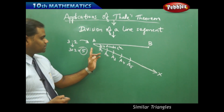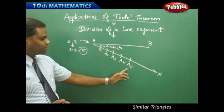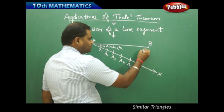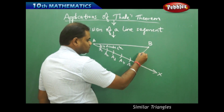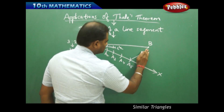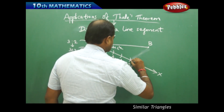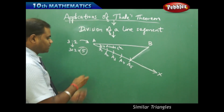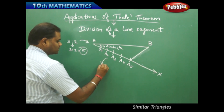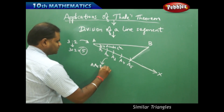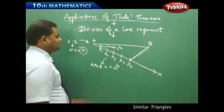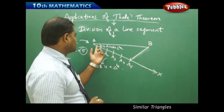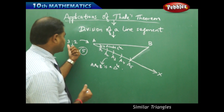So once I divide into 5 parts A1, A2, A3, A4, and A5 on the ray AX, the next step is joining A5 with B. I have now clearly identified that triangle A-A5-B is what I am going to utilize in dividing the line segment into the ratio 3:2.